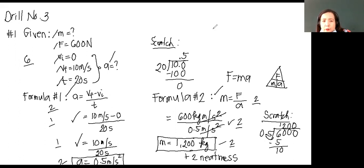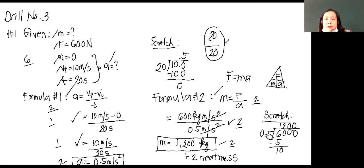So for number 1, the perfect score is 20 over 20. Very good. So let us now proceed to problem number 2.